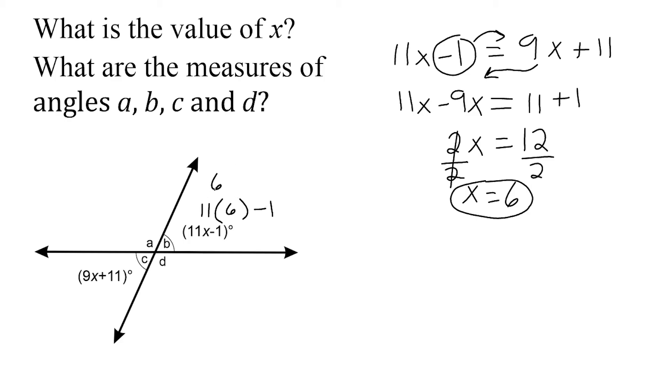11 times 6 is 66. And 66 minus 1 is 65 degrees. So we know that angle B is equal to 65 degrees.